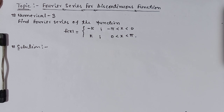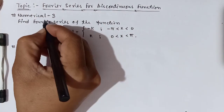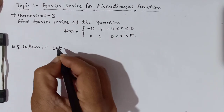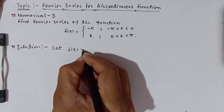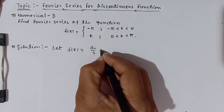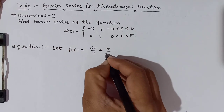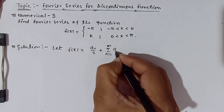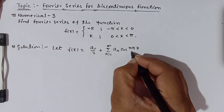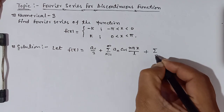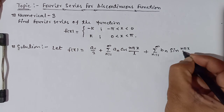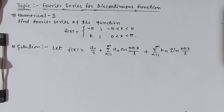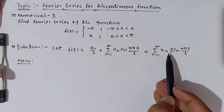So if we have this function, we will find its Fourier series. Let's write the general formula for Fourier series. We need to find a₀, aₙ, and bₙ.